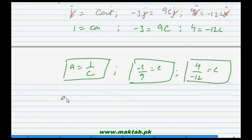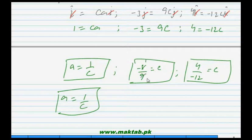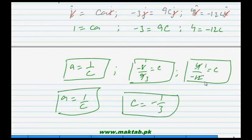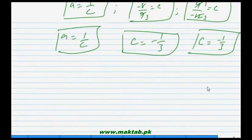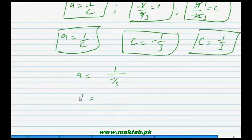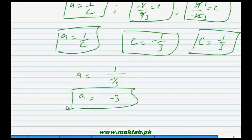From the equation a = 1/c we can't find a directly. From minus 3 = 9c, c equals minus 1/3. Checking: 4 divided by minus 12 also gives minus 1/3. So c equals minus 1/3. Substituting into a = 1/c gives a = 1/(minus 1/3) = minus 3. We have found the value of a in part B.